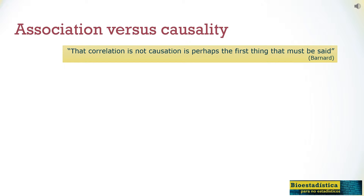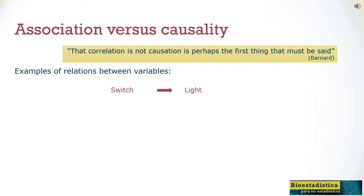In the first example, we will use the switch to turn off and turn on the light. Through the first variable, the switch, I can change the second one, the light. Moreover, if the system works, it works with no room for error.